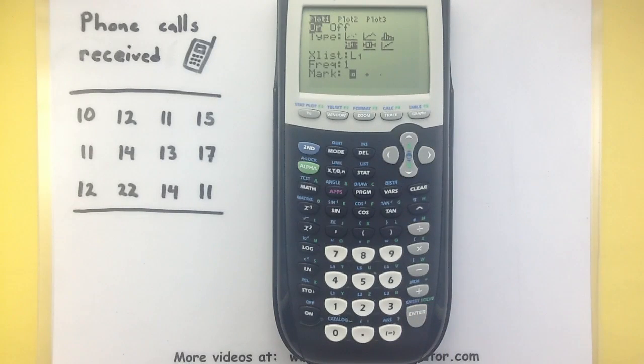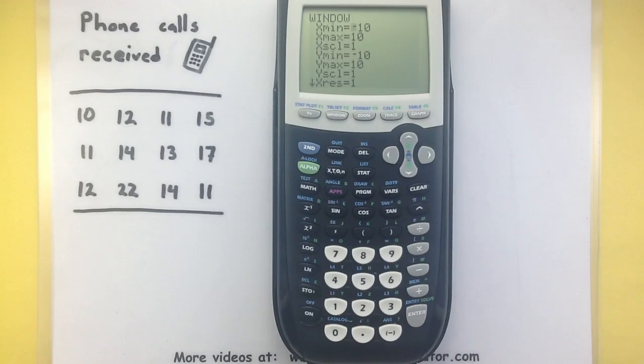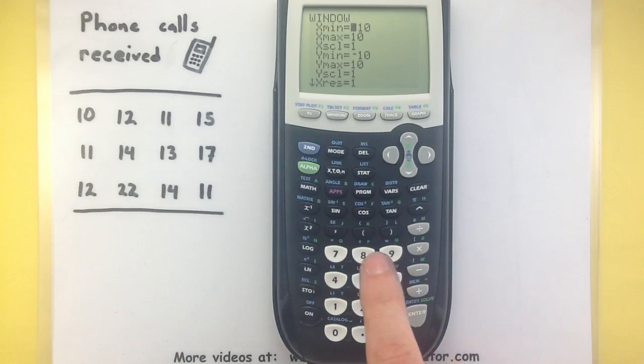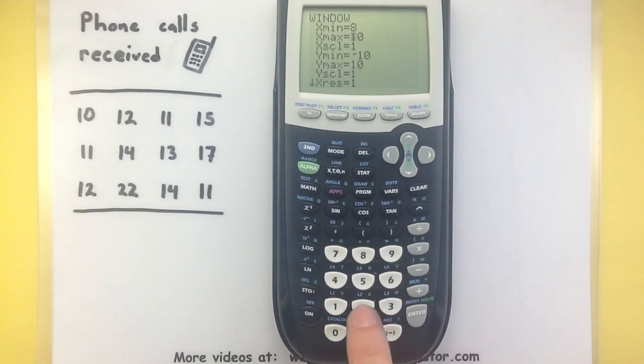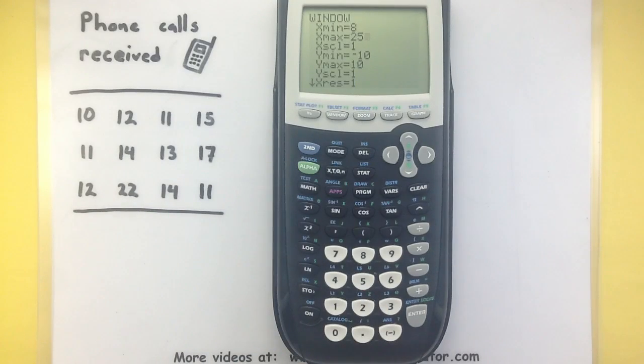Right now we also need to set our window so that we can carefully see everything that's going on here. So press your window button. The X min and X max should correspond to your data over here. So I'm going to select my minimum to be 8. Now let's do our maximum to be 25. That should be plenty in order to incorporate everything that we have.